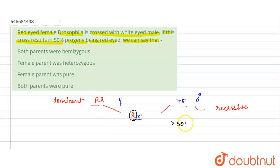More than 50% of the F1 generation should be red-eyed. In the question, what we are getting is only 50% of the progeny are red-eyed.